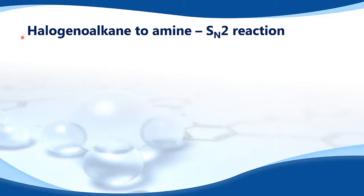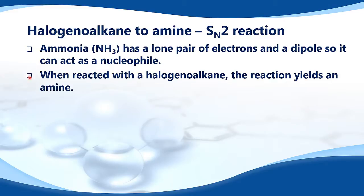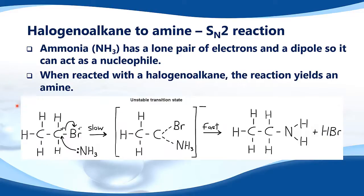Halogeno alkane to amine SN2 reaction. Ammonia, NH3, has a lone pair of electrons and a dipole, so it can act as a nucleophile. When reacted with a halogeno alkane, the reaction yields an amine.